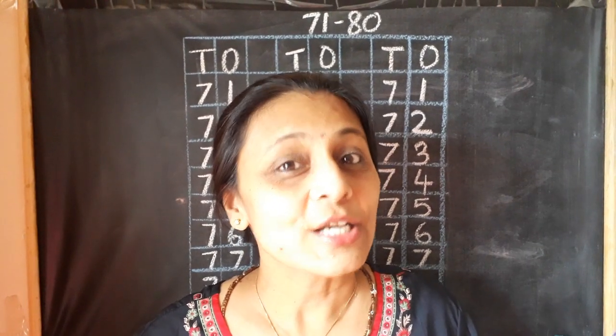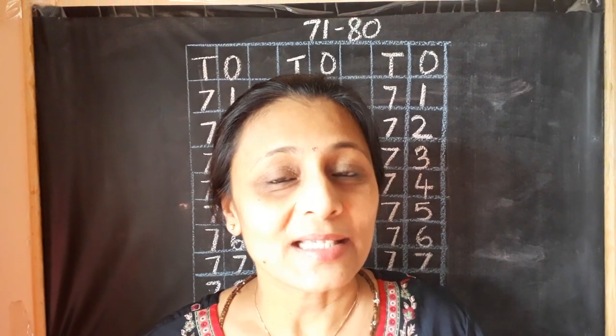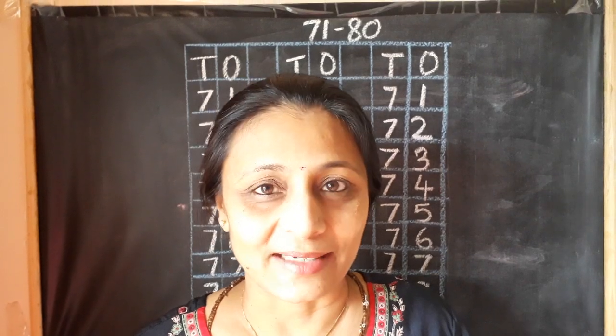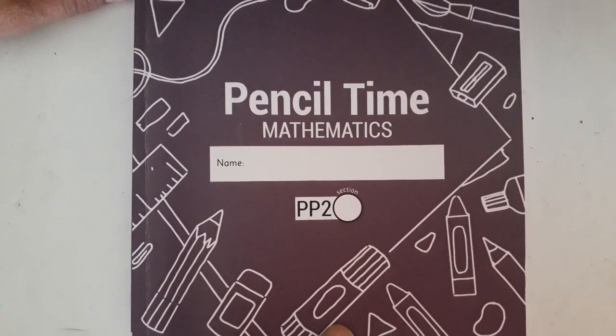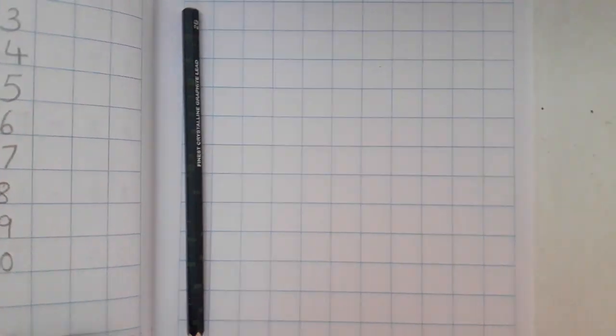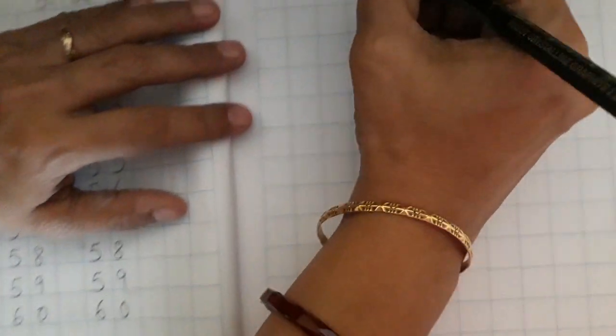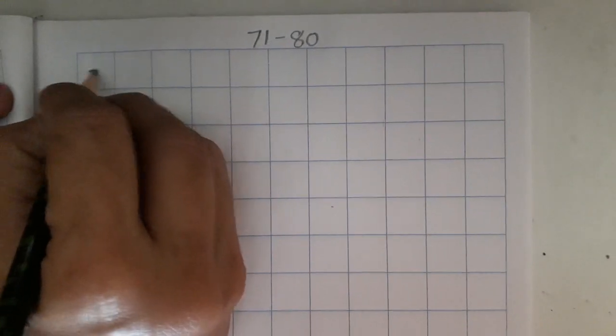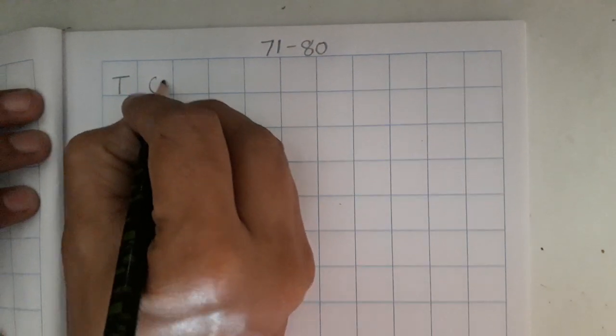So, children, are we ready to open your maths notebook? Let's start. Children, open pencil time mathematics. Now, here we are going to first of all write 71-80 as heading. Here we are going to write today's date. Now, first of all, before writing numbers, we will write.